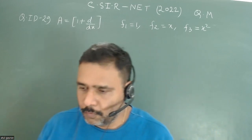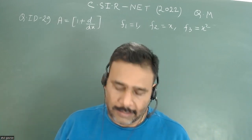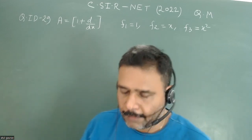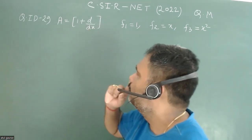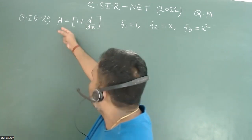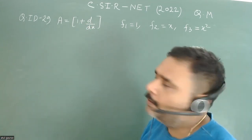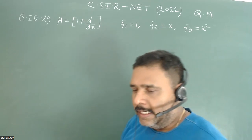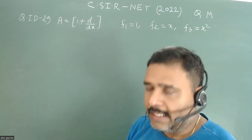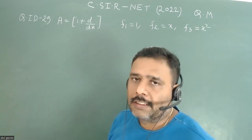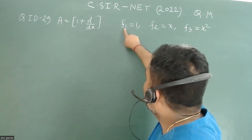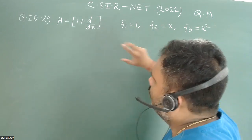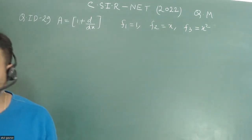Hello, let's try to solve one problem from the CSIR Net 2022 examination, which was held in the month of September. It's a wonderful problem. There is an operator defined, known as a differential operator, which is defined as 1 plus d/dx. We have to write this particular operator in a matrix form, representing it in a space of polynomials which is spanned by f1 = 1, f2 = x, and f3 = x².